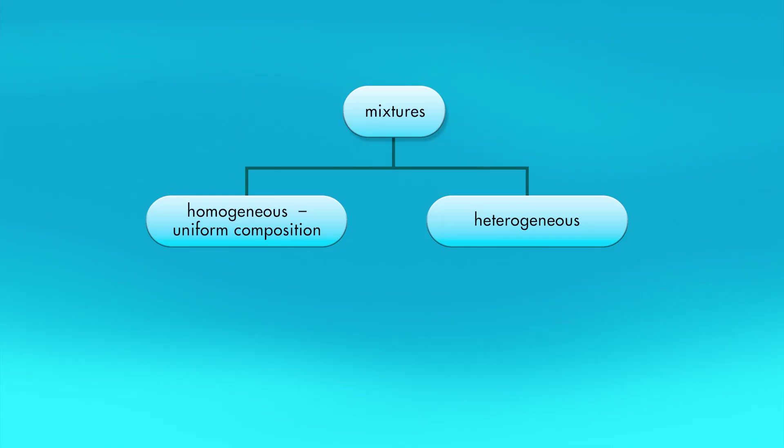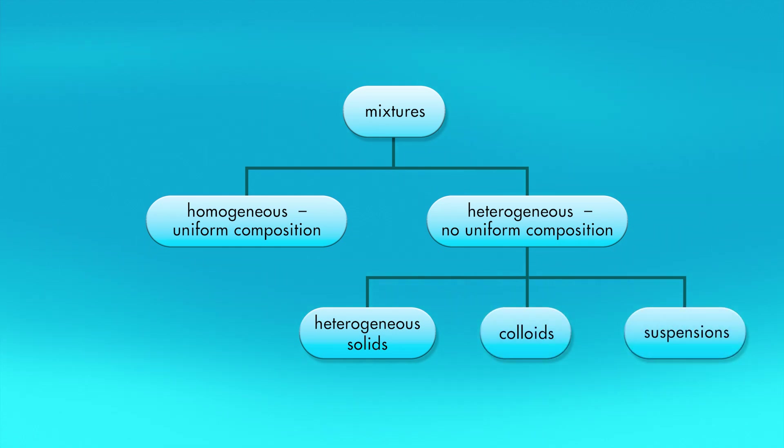We have been discussing homogeneous mixtures. Now let's talk about heterogeneous mixtures. A heterogeneous mixture does not have a uniform composition throughout. Heterogeneous mixtures can be grouped into three broad categories: heterogeneous solids, colloids, and suspensions.